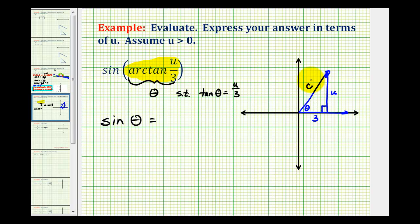So if we let this equal c, c squared would be equal to u squared plus three squared, or c squared is equal to u squared plus nine. And now we'll take the square root of both sides of the equation.